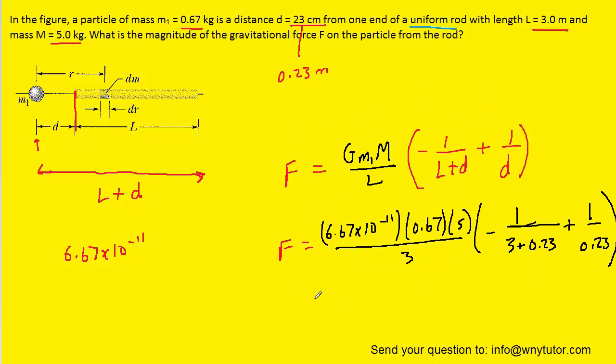And when we carefully plug that into our calculators, we should get approximately 3.0 times 10 to the minus 10 newtons. So, this represents the total force exerted by the rod on the mass that is marked m1.